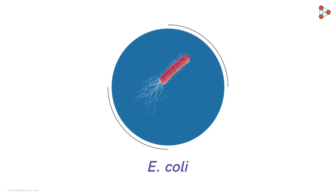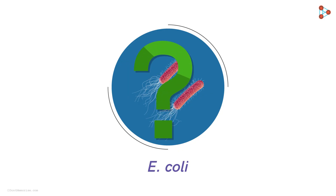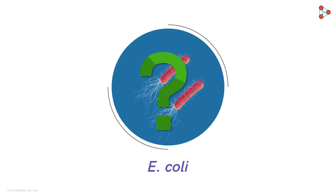A small E. coli cell takes only around 20 minutes to duplicate itself. Amazing, isn't it? Ever wondered how a single-celled bacterium like this one adds new individuals to its population? The reason behind this is truly incredible, and you've heard about it in your lower grades as well. This is all because of the process called mitosis.